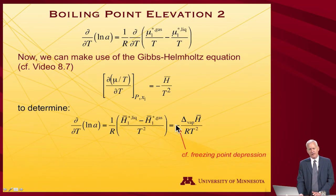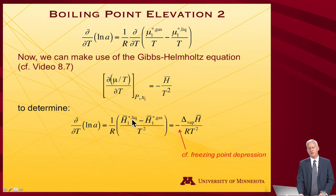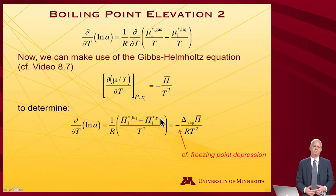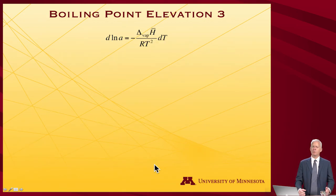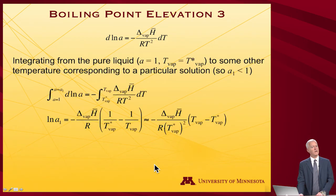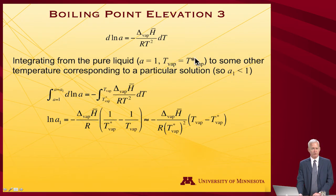One thing to note by comparison to freezing point depression: last time the ordering of the phases was such that we got the enthalpy of fusion directly. In this case, the ordering of the phases gives us negative the enthalpy of vaporization — this is the enthalpy of the liquid minus that of the gas. But enthalpy of vaporization is defined the opposite way: it's the enthalpy of the gas minus the enthalpy of the liquid. So I rearrange one more time to get the derivative expression, then integrate from a pure liquid to a solution that has something dissolved in it, with corresponding temperatures up to the temperature at which the solution is boiling.